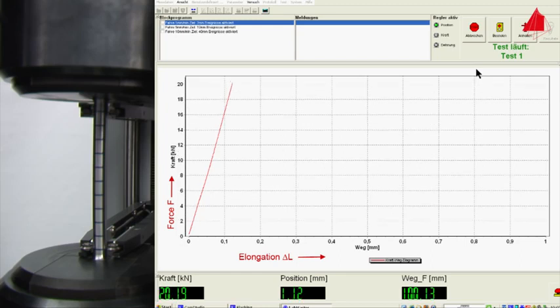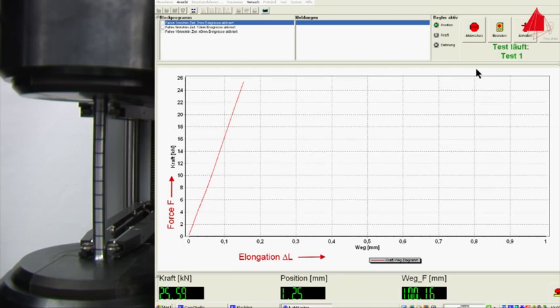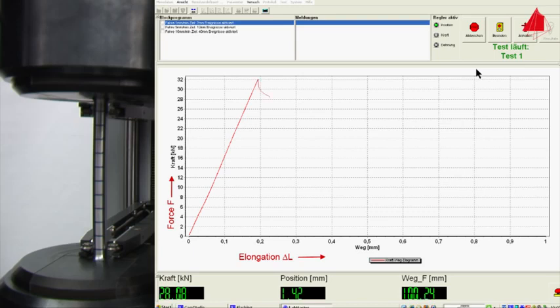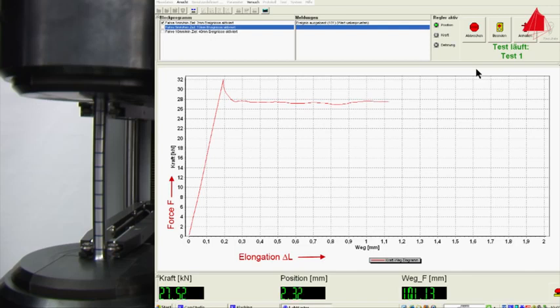In materials with yield point phenomenon, the end of the elastic area can be seen clearly. The plastic deformation starts abruptly and is accompanied by a sudden drop of force. If the test piece were to be unloaded now, it would not spring back to the original length, but instead show a permanent elongation.